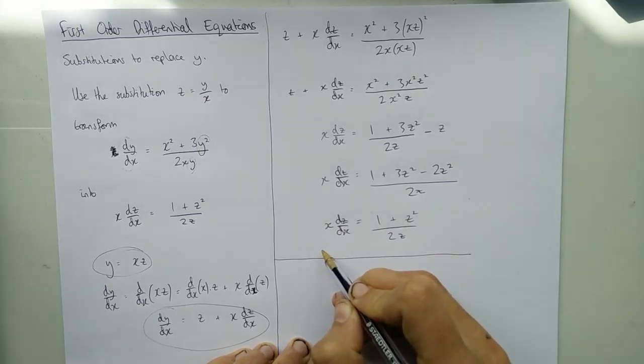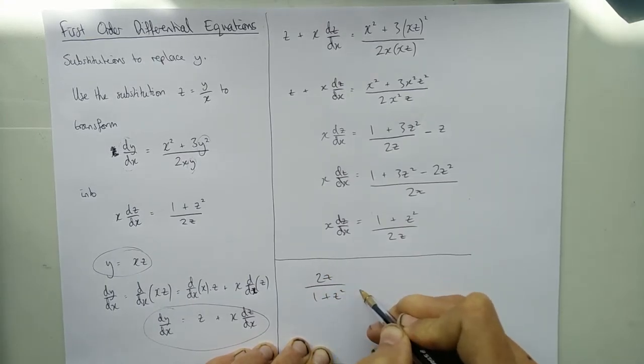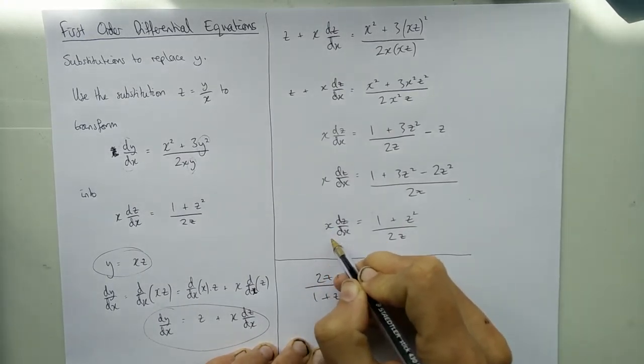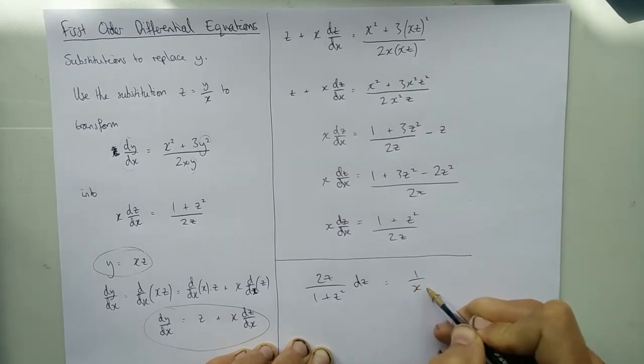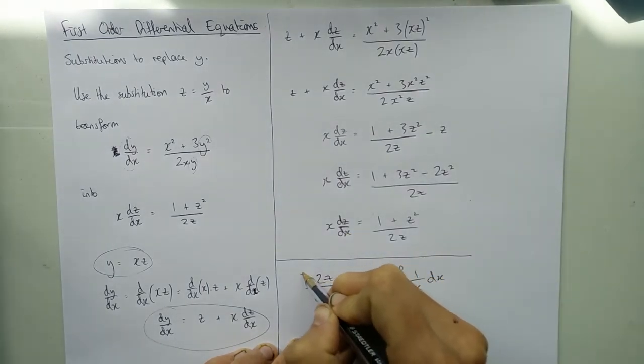It's fairly easy to see how you've done that. You just multiply by 2z and divide by 1 plus z squared to get 2z over 1 plus z squared on this side. And we divide by x to get 1 over x on this side, multiply by dx to get dx on this side, and integrate both sides.